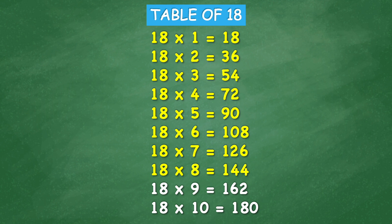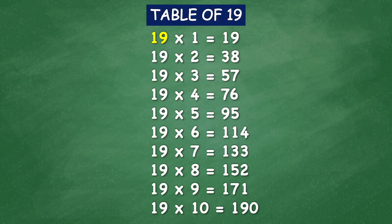Table of 19: 19 times 1 equal 19, 19 times 2 equal 38, 19 times 3 equal 57, 19 times 4 equal 76, 19 times 5 equal 95, 19 times 6 equal 114, 19 times 7 equal 133, 19 times 8 equal 152, 19 times 9 equal 171.